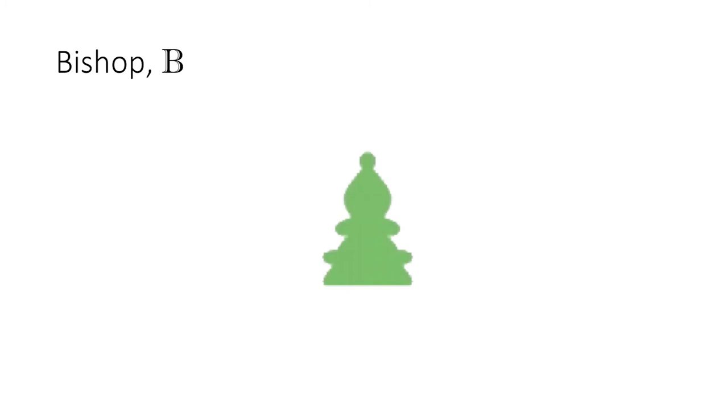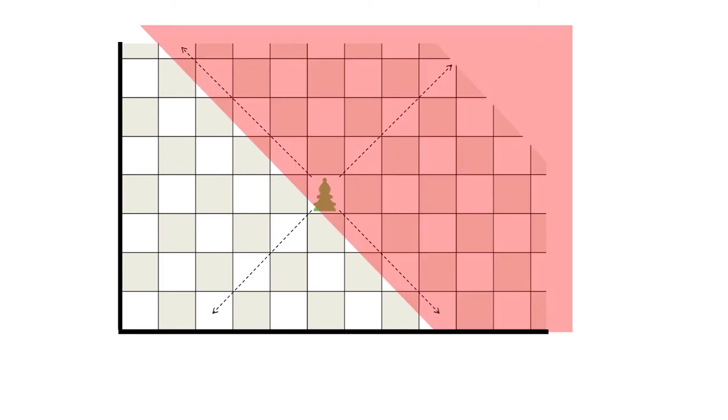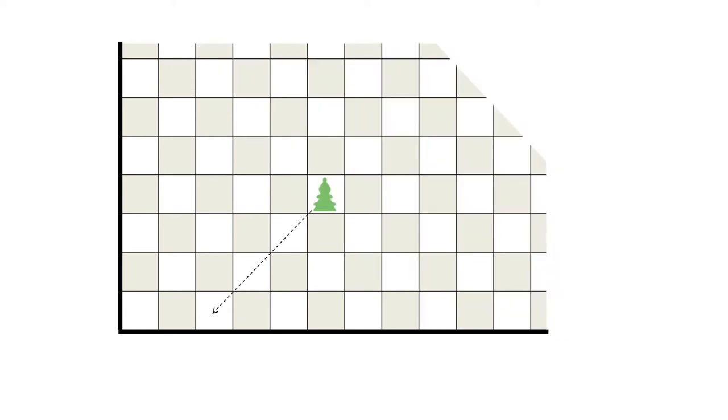We next consider the impartial green bishop. The conventional chess bishop moves diagonally. He can move any number of squares in any of four directions, but the diagonal plague disables three of these directions, allowing him to move only southwestward.